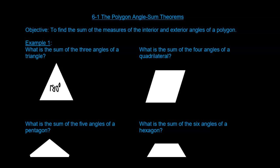The sum of the three angles of a triangle adds up to 180 degrees, and we know that from the triangle sum theorem. But what about a quadrilateral? If we were to take this quadrilateral and draw a diagonal, we end up with two triangles. So each triangle is going to have 180 degrees, which means we would have 2 times 180, which is 360 degrees.